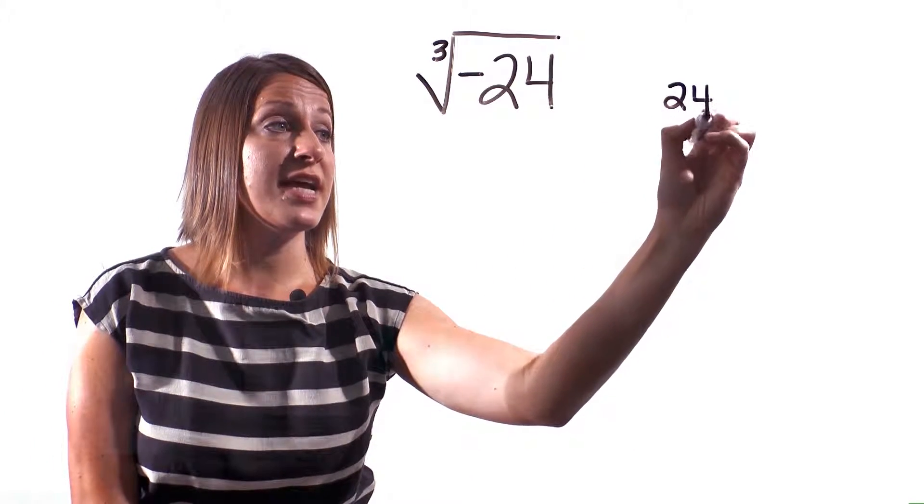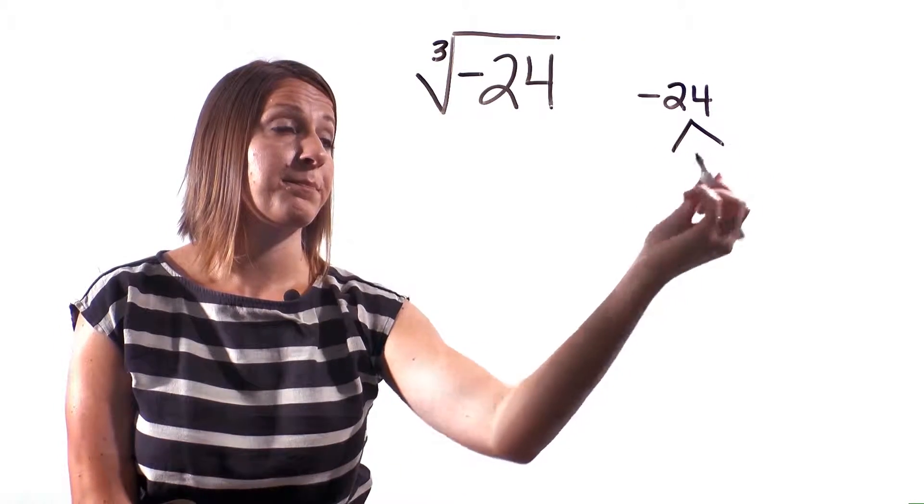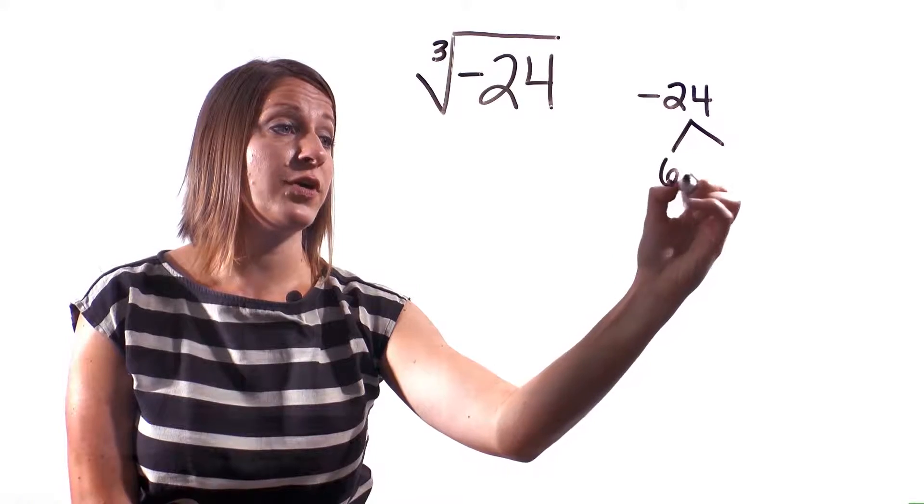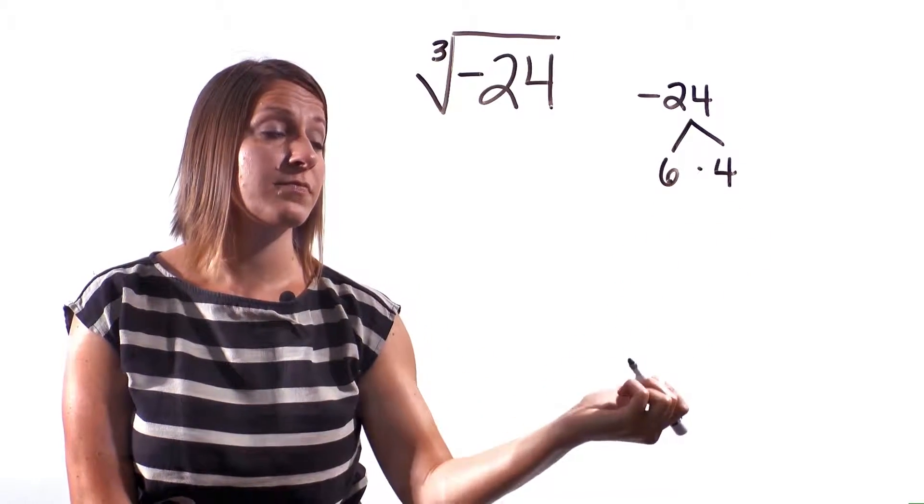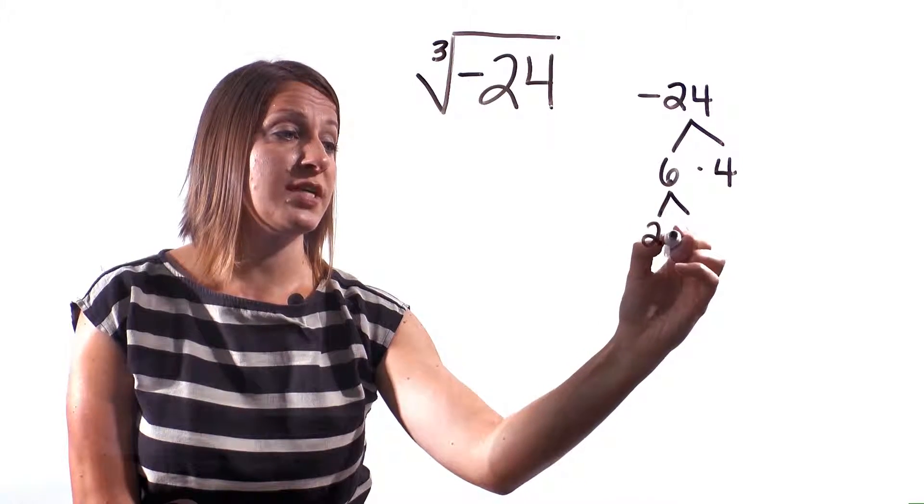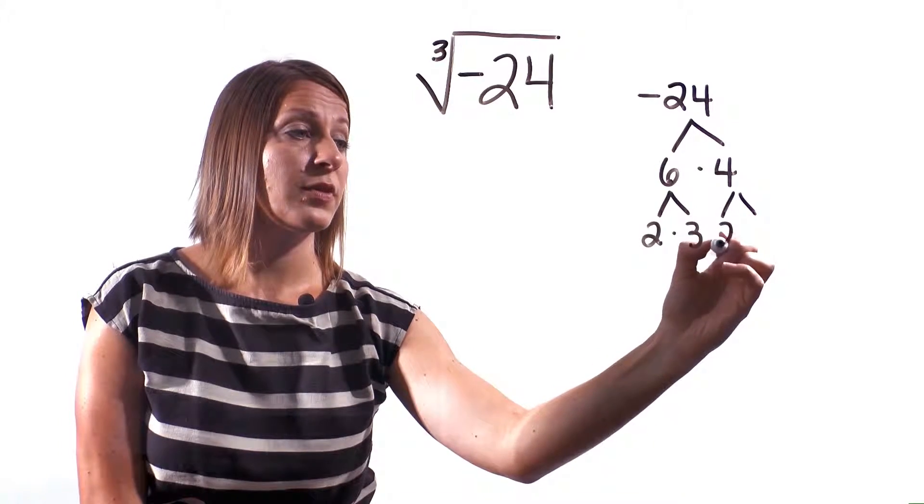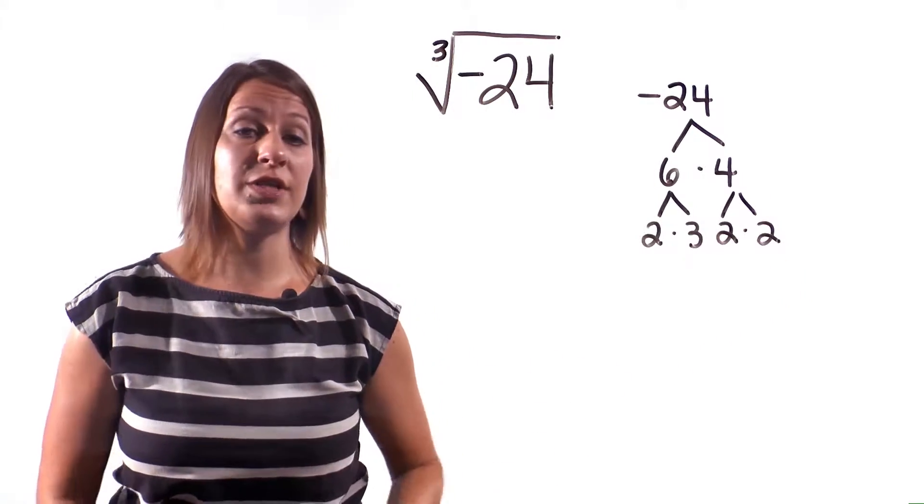We will take our negative 24, and we're going to go ahead and make a factor tree. 6 times 4, and then we can break 6 to 2 times 3, and then we can break down 4 to 2 times 2.